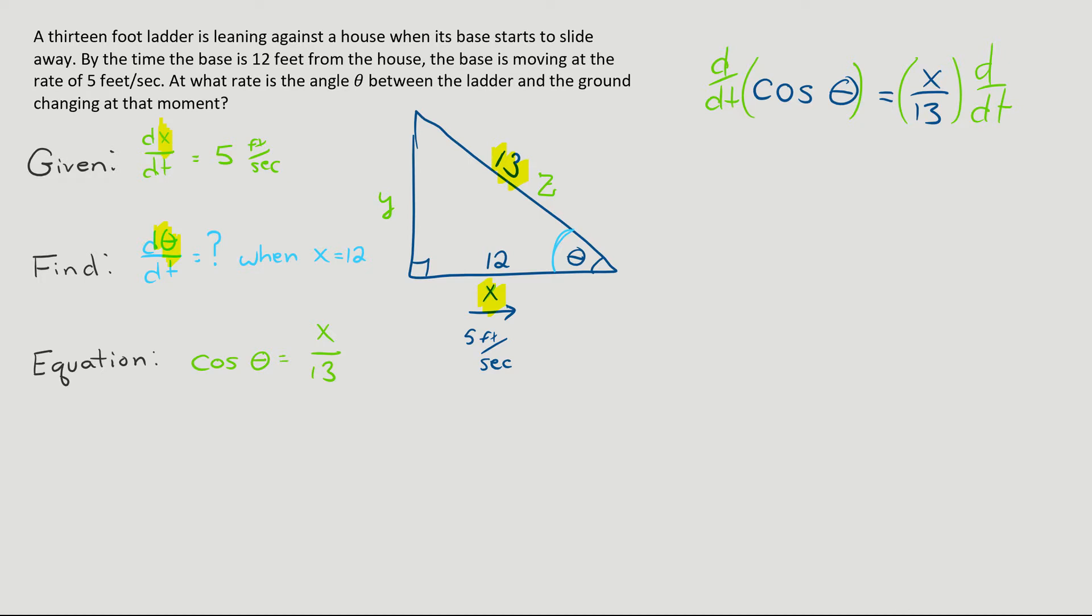On the left side, it's going to be negative sine theta times dθ/dt. So remember, because this variable does not match up with this variable, it's implicit. So I did the derivative of the outside function, derivative of cosine, which is negative sine, and then the derivative of the inner, which is dθ/dt.